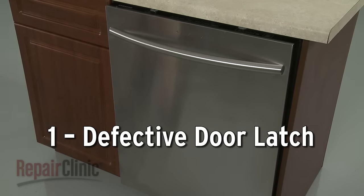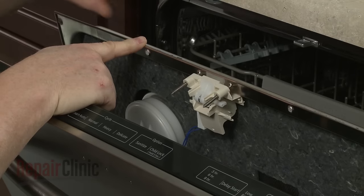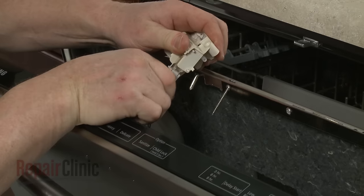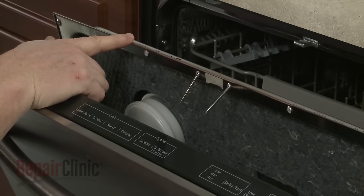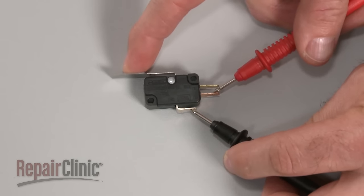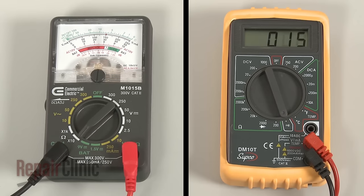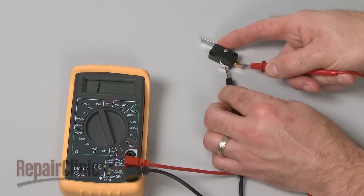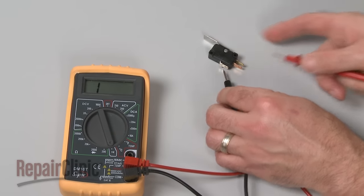The dishwasher door must be properly latched for the appliance to run. However, a defective door latch assembly may prevent the dishwasher from running even with the door fully closed. For many latches, you can use a multimeter to test the microswitch for continuity, a continuous electrical path inside the switch. If the microswitch tests negative for continuity, then the door latch is defective and will need to be replaced.